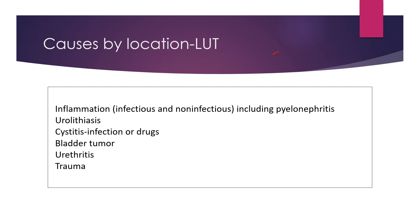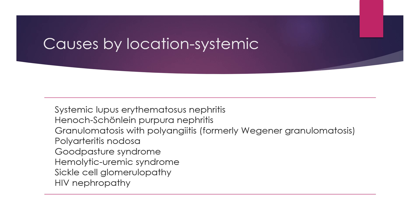For the lower urinary tract — anywhere from the pelvic-calyceal system — causes include infection or inflammation, stones, and cystitis (secondary to infection or drugs). For infection, adenovirus is important to remember; for drugs, cyclophosphamide. Bladder tumor is very less likely in kids. Always remember urethritis. Important systemic causes presenting as kidney disease include SLE, Henoch-Schönlein purpura, and hemolytic uremic syndrome.